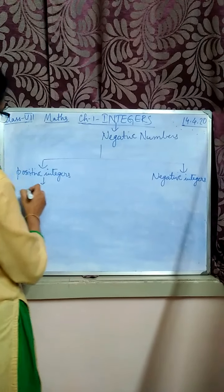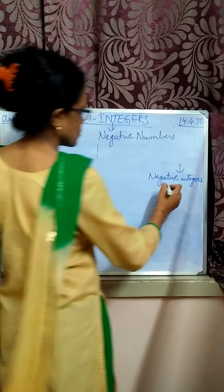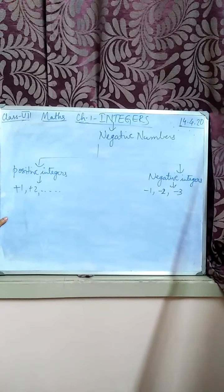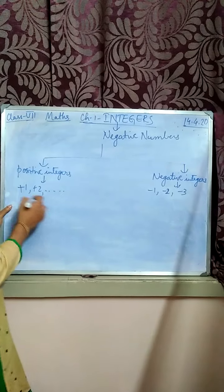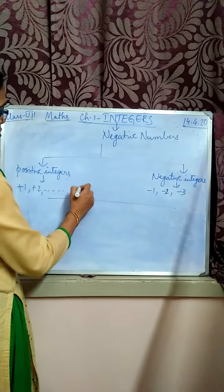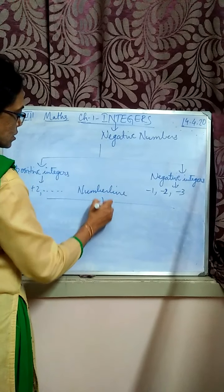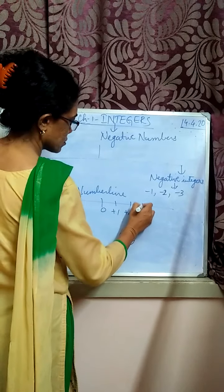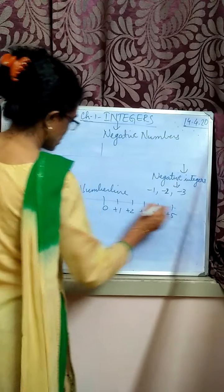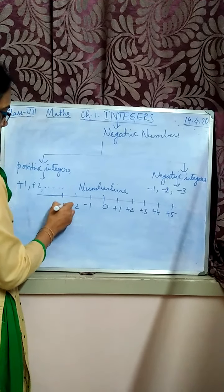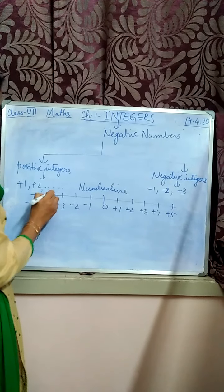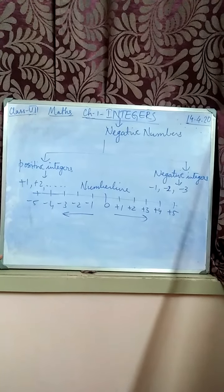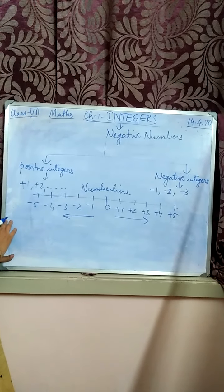Positive integers are plus 1, plus 2, like this. In case of integers, we will be writing the sign — this sign is very important. These are negative integers. Then again, for positive integers, we are specifying them using a number line. We are specifying both the positive as well as the negative integers on the number line.